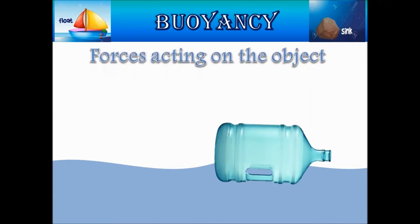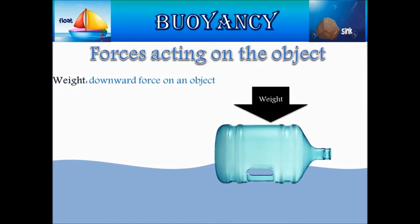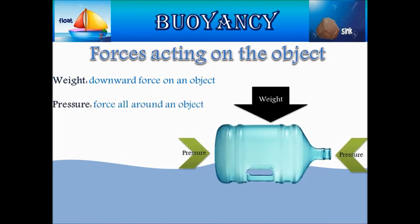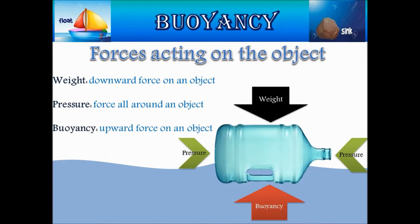When a body is immersed in a liquid, it will experience the following forces. First, the weight of the object acting in the downward direction due to gravitational pull of earth. Second, the forces acting on the body laterally due to lateral pressure. The resultant of all these lateral forces is equal to zero, so the force due to pressure is not considered in calculation of buoyant force. Third, the upward force or buoyant force acting on the body due to buoyancy.